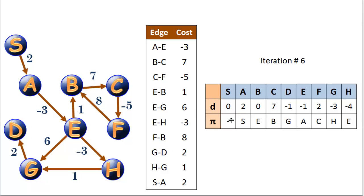This is our solution — it tells us the distance to every vertex in the graph and the route. We're able to trace the route by looking at the predecessor vertex, or the pi value. That concludes this video on Bellman-Ford's algorithm. Please give me the thumbs up and subscribe to my channel. I'm Joe James — thanks for watching.